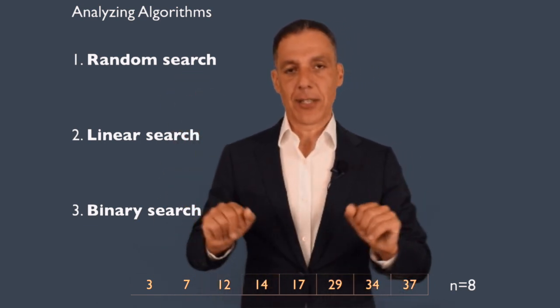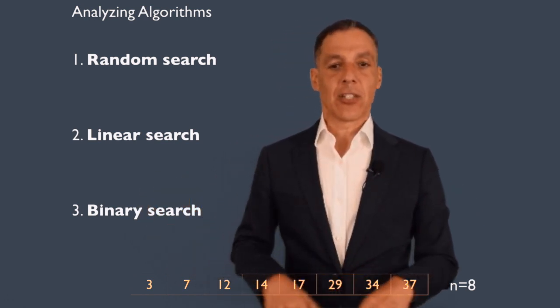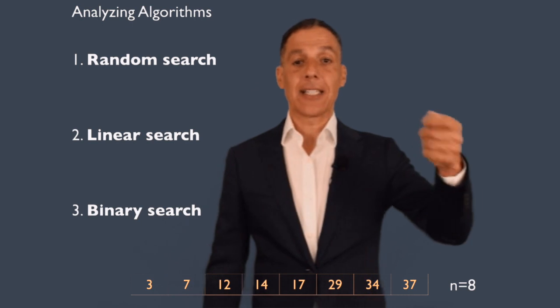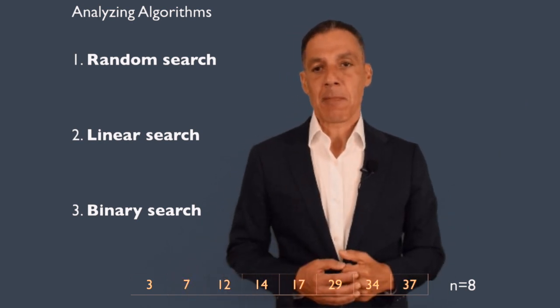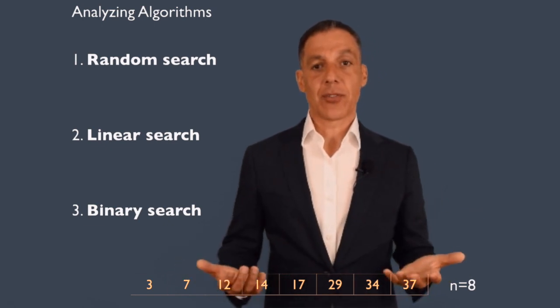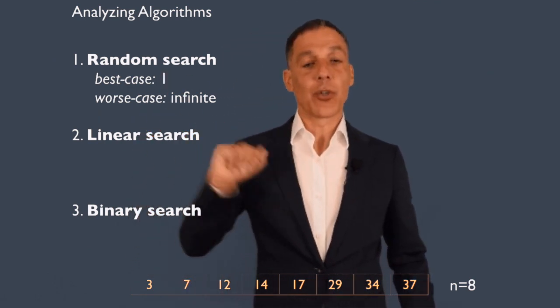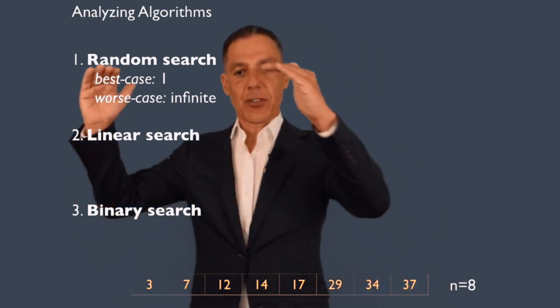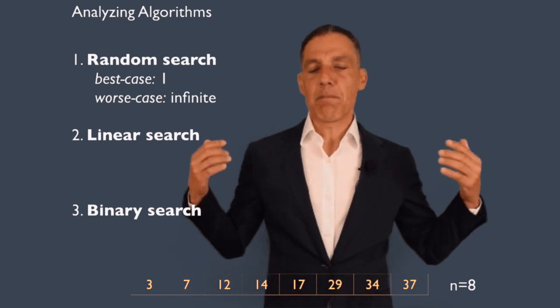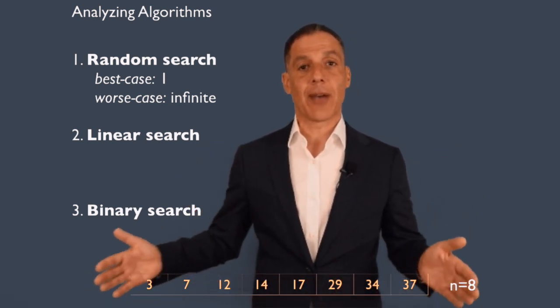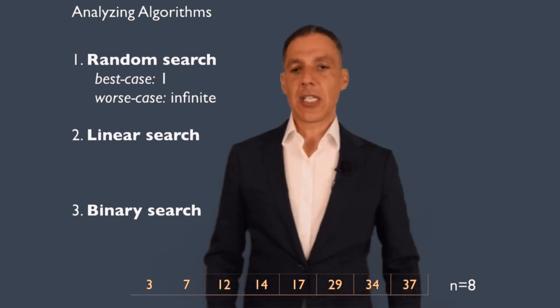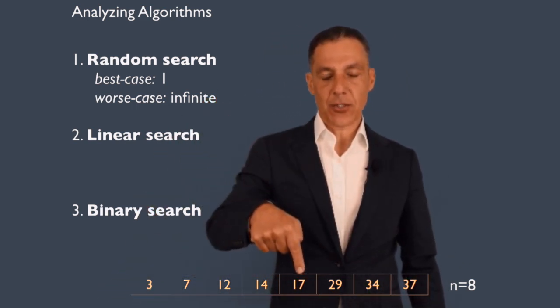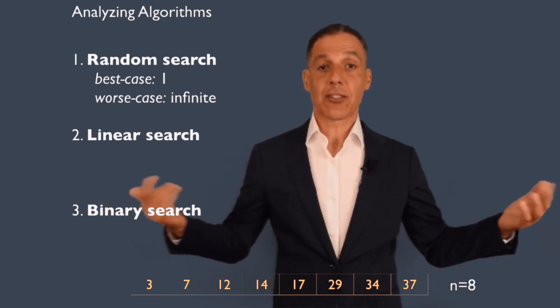Random search — which is a really dumb thing to do, but useful by way of example — says: pick a random location in the list and check it against the key. If you find it, return that you found it; if not, try again. One of the things you always want to think about when developing algorithms is efficiency, and we think about both best case and worst case analysis. The best case for random search is one operation — you pick a random location and happen to find the key immediately. You got lucky.